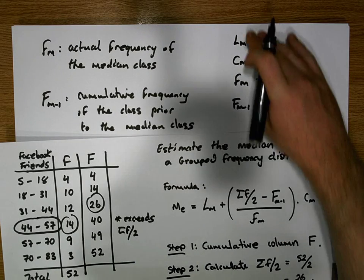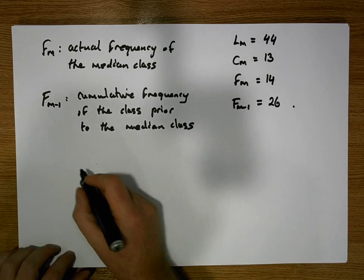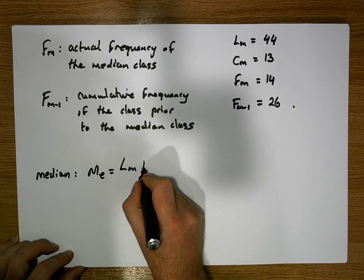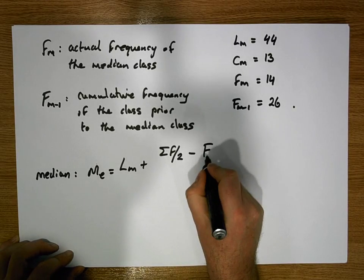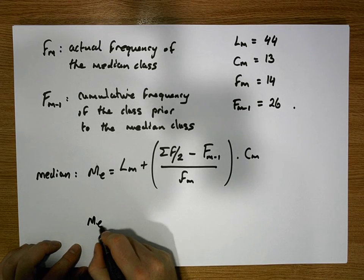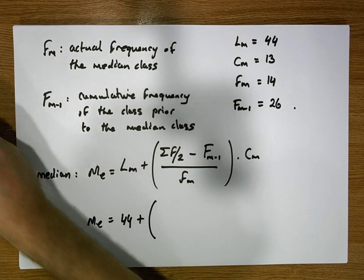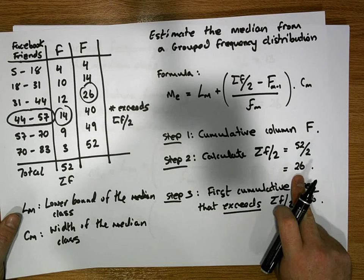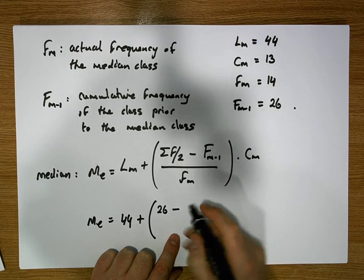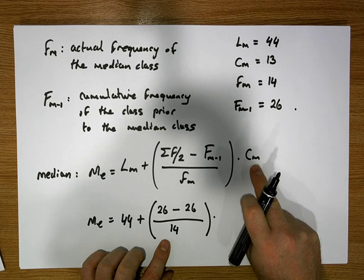Now that we have all of our values, we can substitute them into our formula for the median. The formula is M subscript E is equal to L of M plus sigma F over two minus capital F of M minus one, divided by small f of M, times C of M. So we end up with the median equal to 44 plus — sigma F over two is 26 — so that's 26 minus capital F of M minus one, which is also 26, divided by small f of M which is 14, times C of M which is 13.